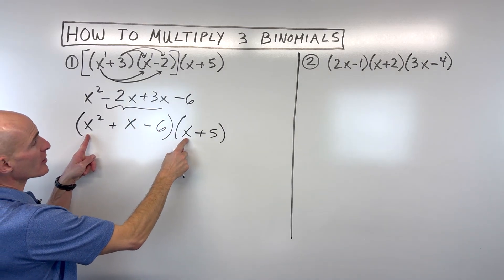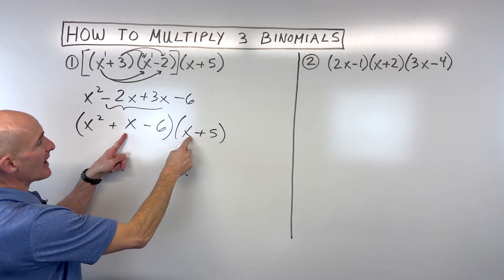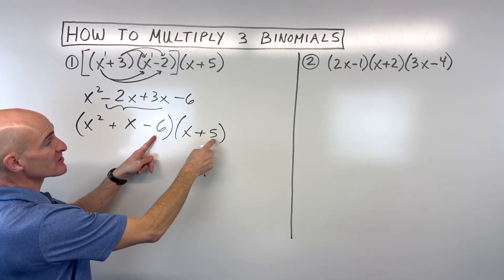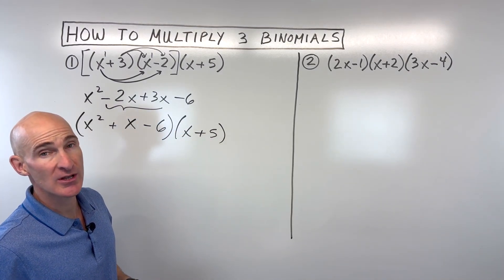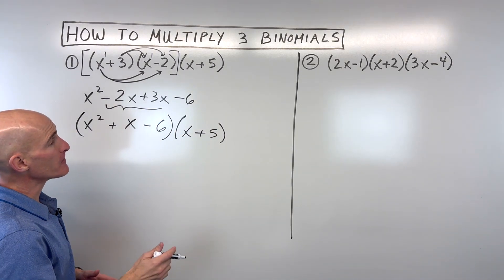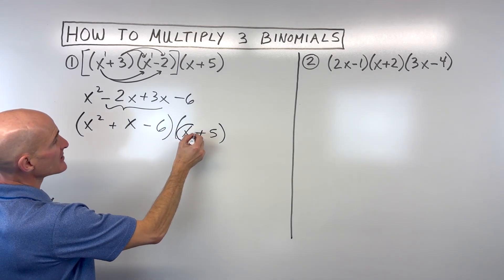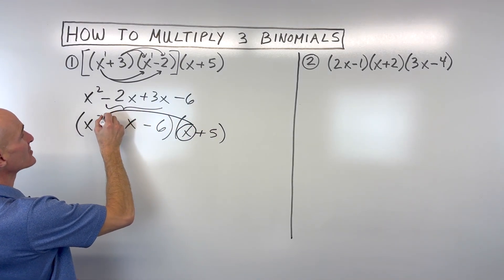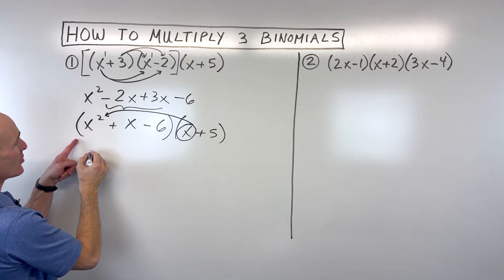The other way to do it is to take x squared times these two terms, then x times these two terms, then negative six times those two terms. Either way, you're going to get the same answer. I'm going to do it this way. I'm going to take x, and I'm going to distribute it to x squared. So x times x squared is x cubed.